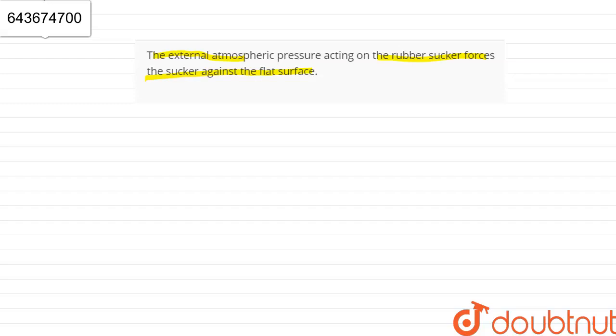We have to explain the mechanism of the rubber sucker. Suppose this is a table. My drawing is not so good, but suppose this is a table and there is a rubber sucker put on it. I have just made another diagram to clarify. Suppose this is a rubber sucker.